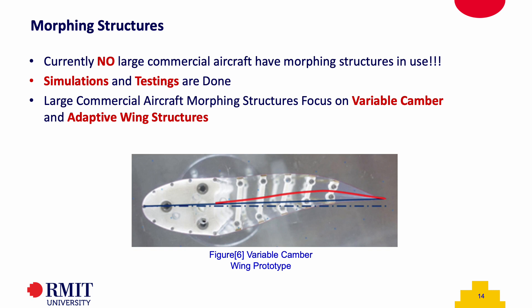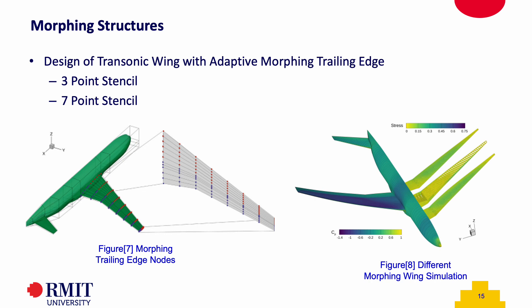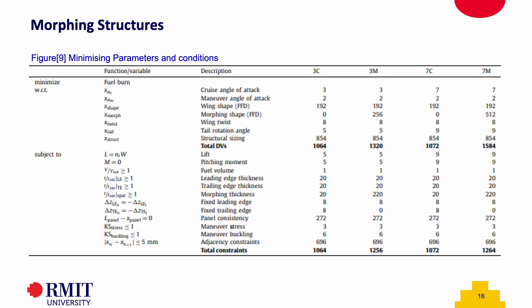Large commercial aircraft morphing structures mainly focus on variable camber and adaptive wing structures. For the morphing structures, we will focus on the design of a transonic wing with an adaptive morphing trailing edge. As you can see on the bottom left figure, the trailing edge with the blue nodes is able to adapt and morph according to flight conditions. So what is 3-point stencil and 7-point stencil? 3-point stencil basically means flight conditions with 3 conditions and 7-point stencil has 7 conditions. These are the two cases that the simulation has been done for the morphing trailing edge.